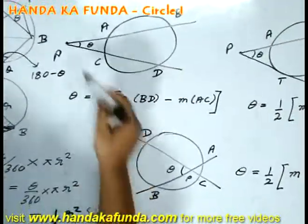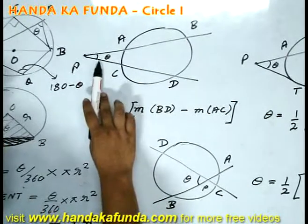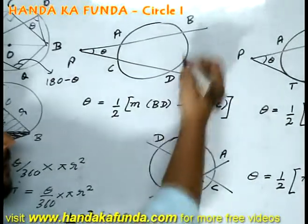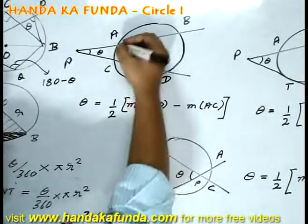Now, let's look at this case. PAB is a secant. PCD is a secant. And I am asked for the angle at P and let's say that is theta. That will be given by half of measure of the arc BD minus measure of the arc AC.